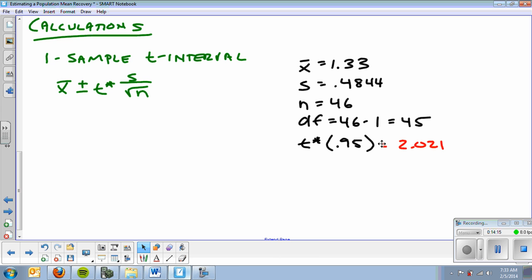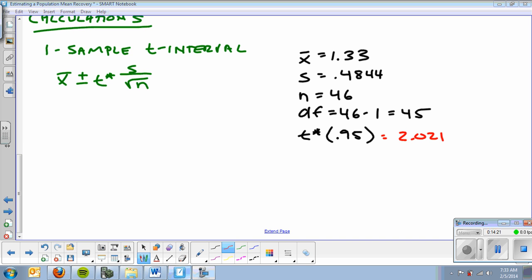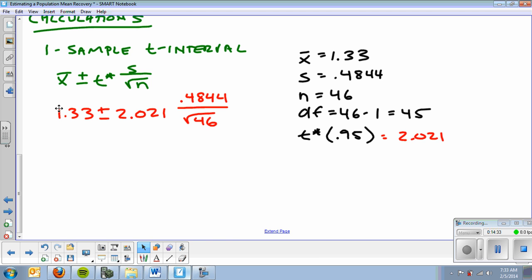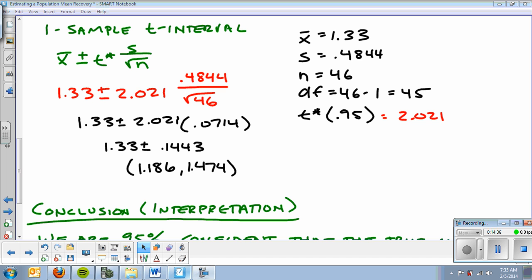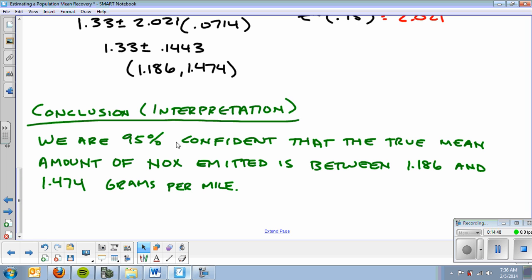Now, I'm going to pause the video real quick and do the calculations. I'll plug them in first so you can see it. 1.33 plus or minus 2.021 times 0.4844 over the square root of 46. I kind of finished the problem out. I'm running out of time. You can check each step. I do the standard deviation first. Then I multiply, subtract, and add. And then you have your conclusion or your interpretation. We are 95% confident that the true mean amount of NOx emitted is between 1.186 and 1.474 grams per mile. And I did add units to that.